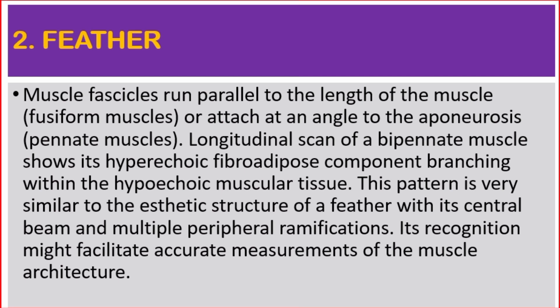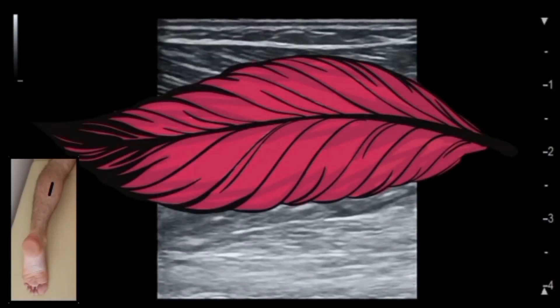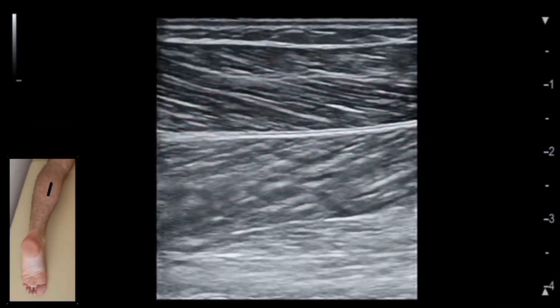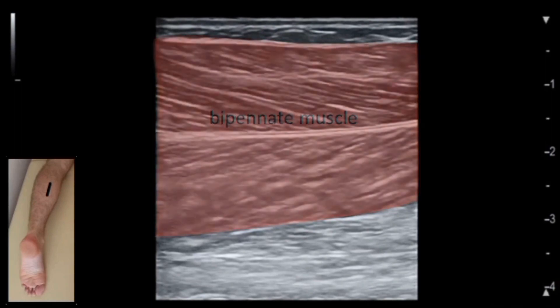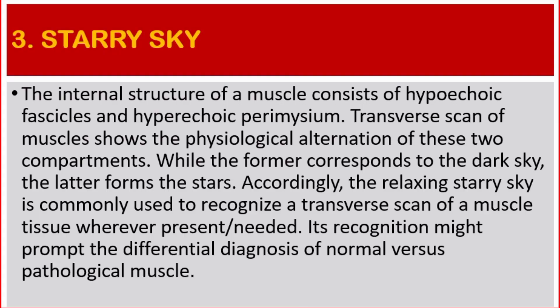Its recognition might facilitate accurate measurements of the muscle architecture. Number three: starry sky. The internal structure of a muscle consists of hypoechoic fascicles and hyperechoic perimysium. Transverse scan of muscles shows the physiological alternation of these two compartments — the former corresponds to the dark sky, the latter forms the stars. Accordingly, the relaxing starry sky is commonly used to recognize a transverse scan of muscle tissue. Its recognition might promote the differential diagnosis of normal versus pathological muscle.